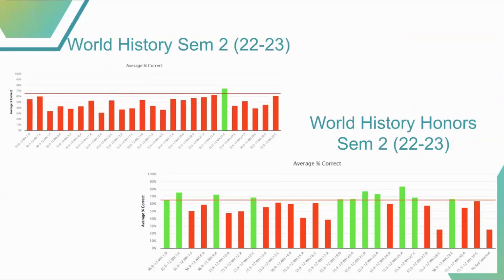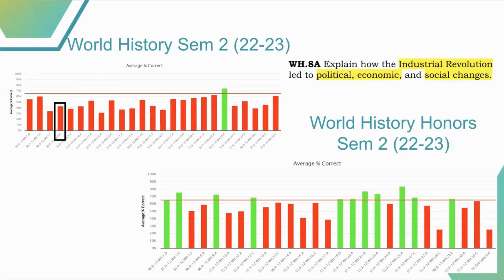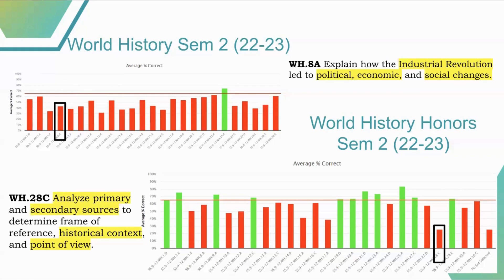Before we dive into practicing, what makes perfect? We will focus on Quarter Three content. Based on district-wide historical data for Quarter Three, we will focus on the Industrial Revolution. We do see other SEs that are a little bit lower, but those cover Quarter Four material — please stay tuned for Quarter Four training. Our session today focuses on SE 28C: historical context, point of view, and analyzing primary and secondary sources. If we actually teach students to think like historians, we can definitely boost this SE.